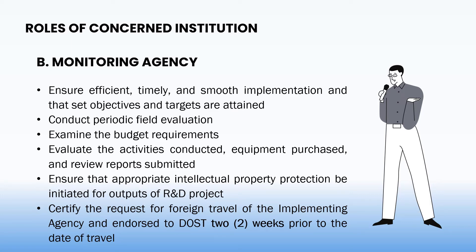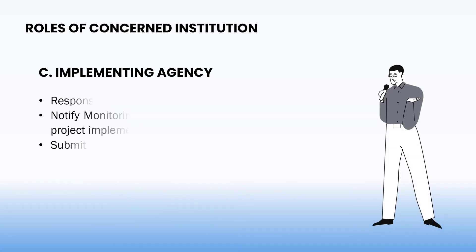The monitoring agency shall conduct periodic field evaluation, examine a project's budget requirements, evaluate activities conducted, review equipment purchased and reports submitted, and ensure that appropriate IP protection is initiated. They also certify requests for foreign travel of the implementing agency if essential and necessary to the project and consistent with the approved LIB. The implementing agency, on the other hand, shall have primary responsibility for all project activities, notify the monitoring agency of significant concerns or problems, and ensure submission of required reports on time.